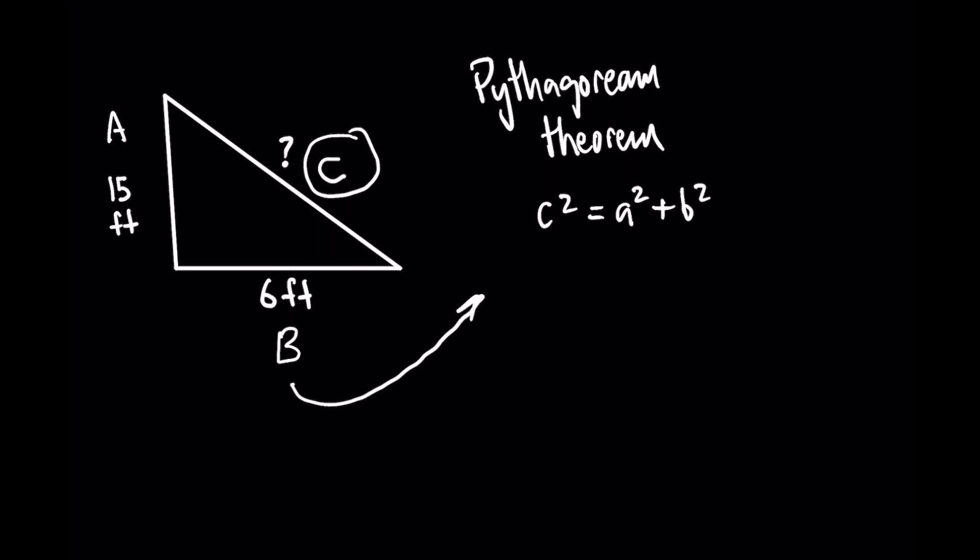So all you have to do now is plug these values into the equation. So you would say c squared is equal to 15 squared, which is the value for a, plus 6 squared, which is the value for b.